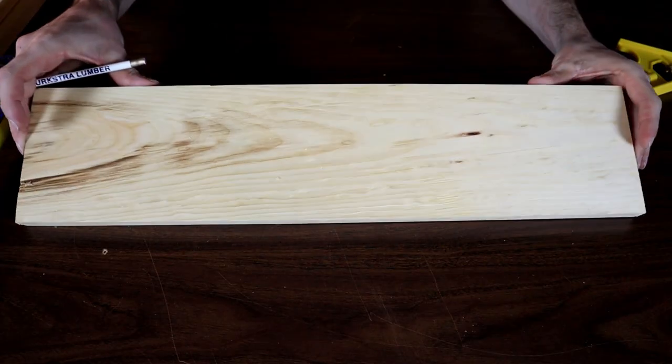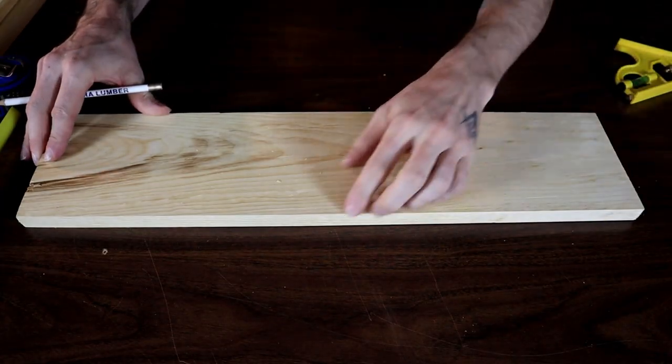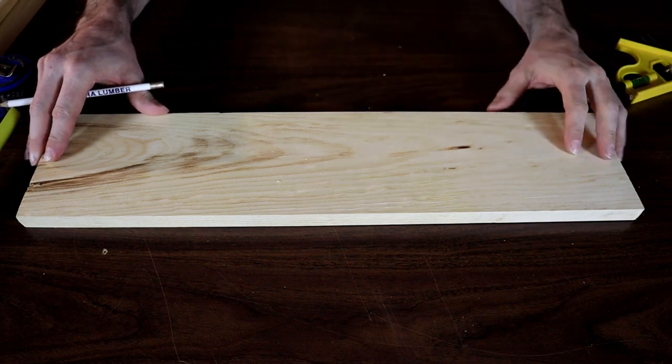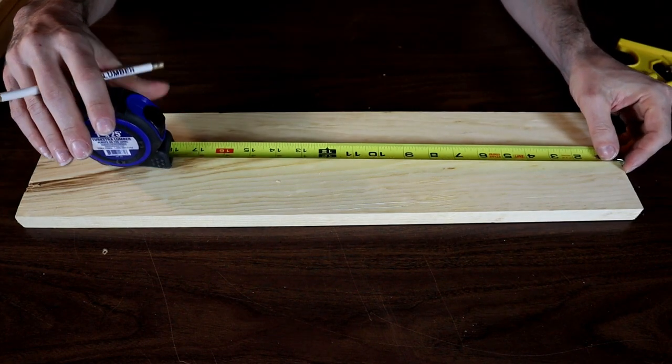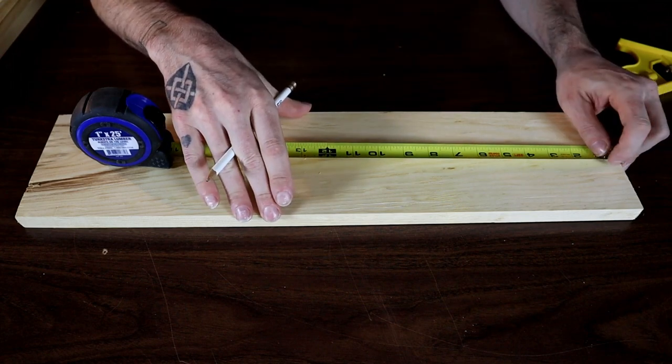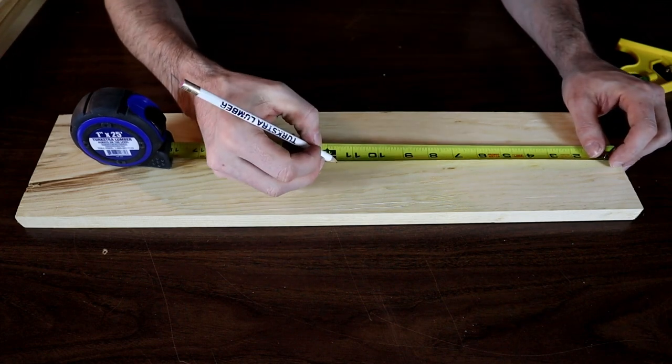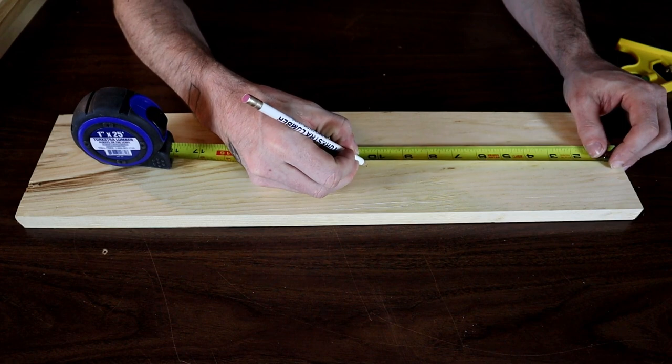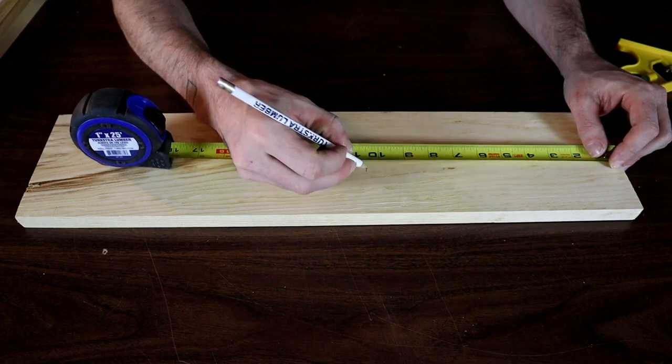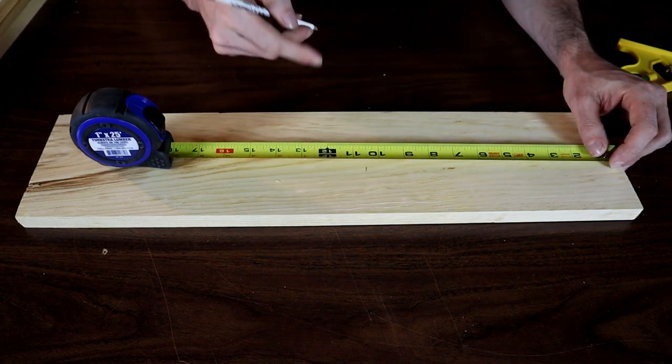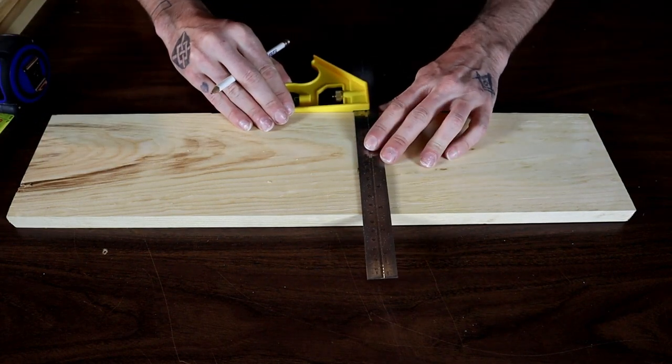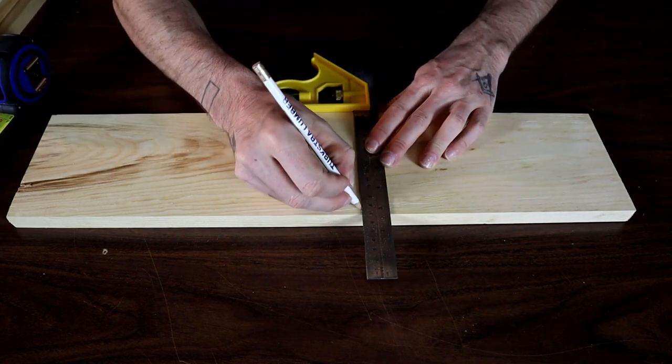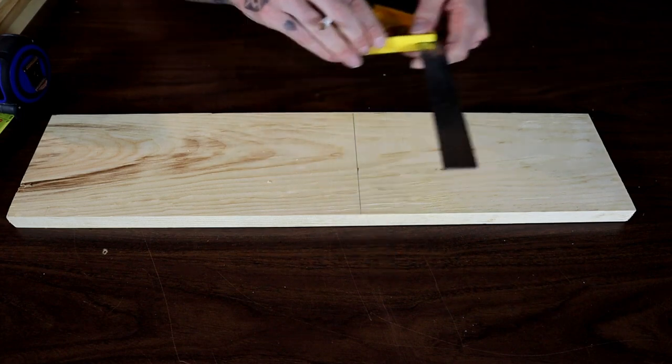I'm going to be using this one by six pine, which is actually five and a half inches wide, and I'm going to make my box an overall of 12 inches long. Since this D4S is three quarters of an inch thick, we'll go under 12 inches by an inch and a half. That way, once we put the ends on, the overall will be 12 inches. So we'll mark that, draw our line across, and cut that out.